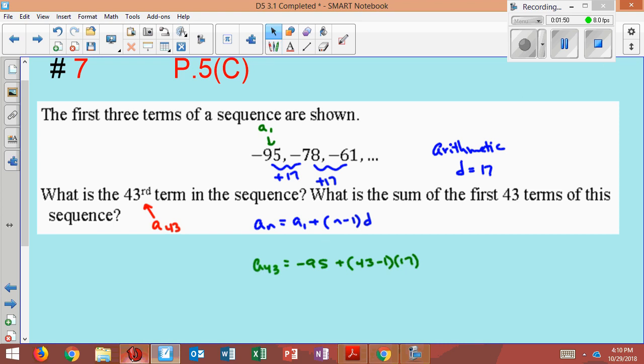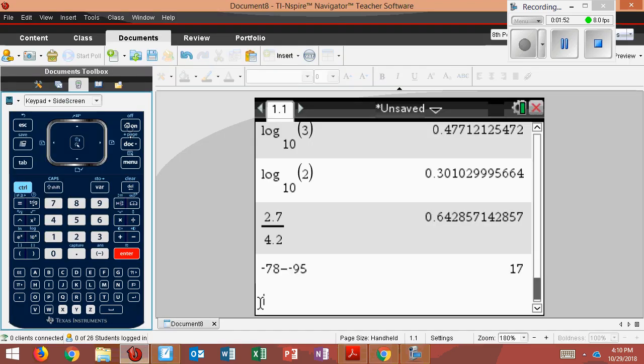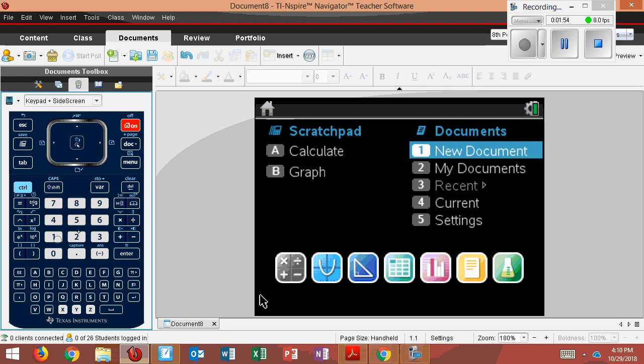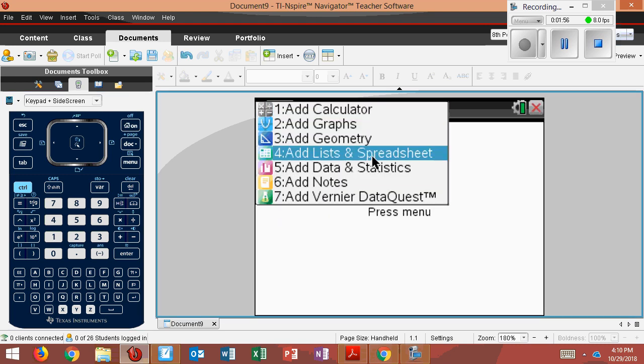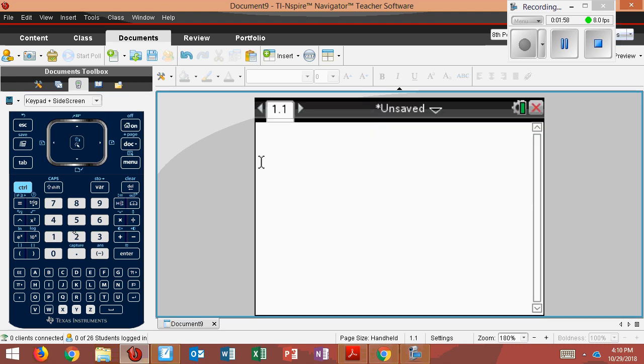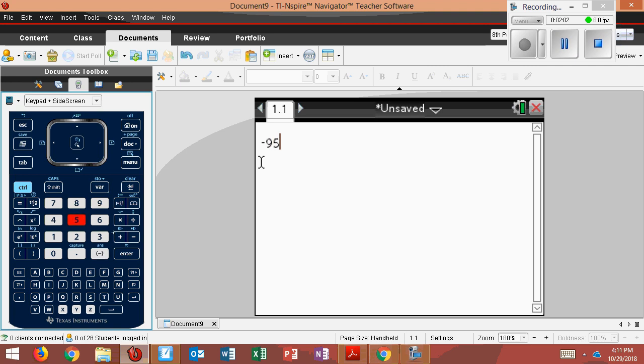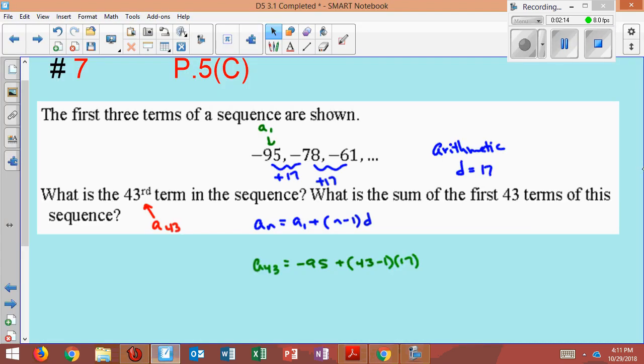So I'll go type this in the calculator, and we'll see what we get here. So I'll take the first term, which was negative 95, and I'm going to add 43 minus 1, because I want to know the 43rd term, times the difference, which was 17. So 619 is A sub 43.